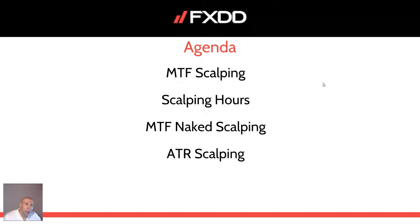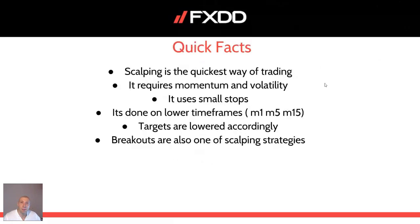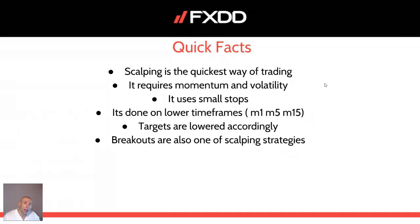Quick facts about scalping — let me remind you of these important facts. Scalping is the quickest way of trading. It requires momentum and volatility. It uses small stops and is done on lower time frames: M1, M5, and M15. Targets are always lowered accordingly. Breakouts are also one of the scalping strategies, and you can try breakout trading even if you're not sure what intraday or swing trading is. You can scalp with breakouts, and I will show you how you can also scalp with the ATR indicator. It will require a little bit of practice, but without practice there is no real success.